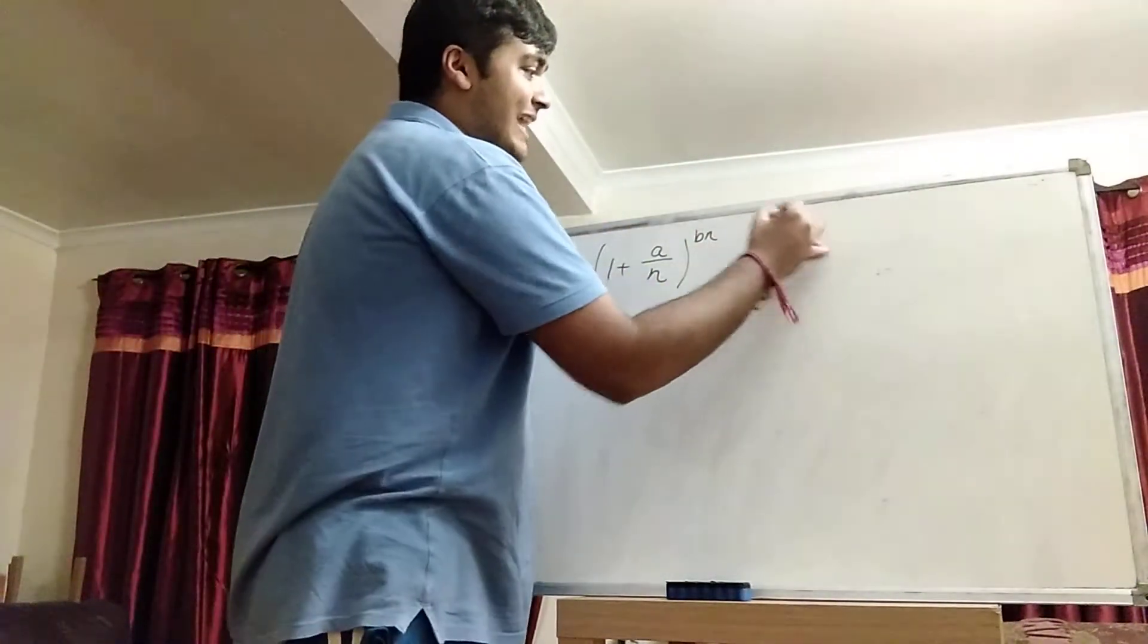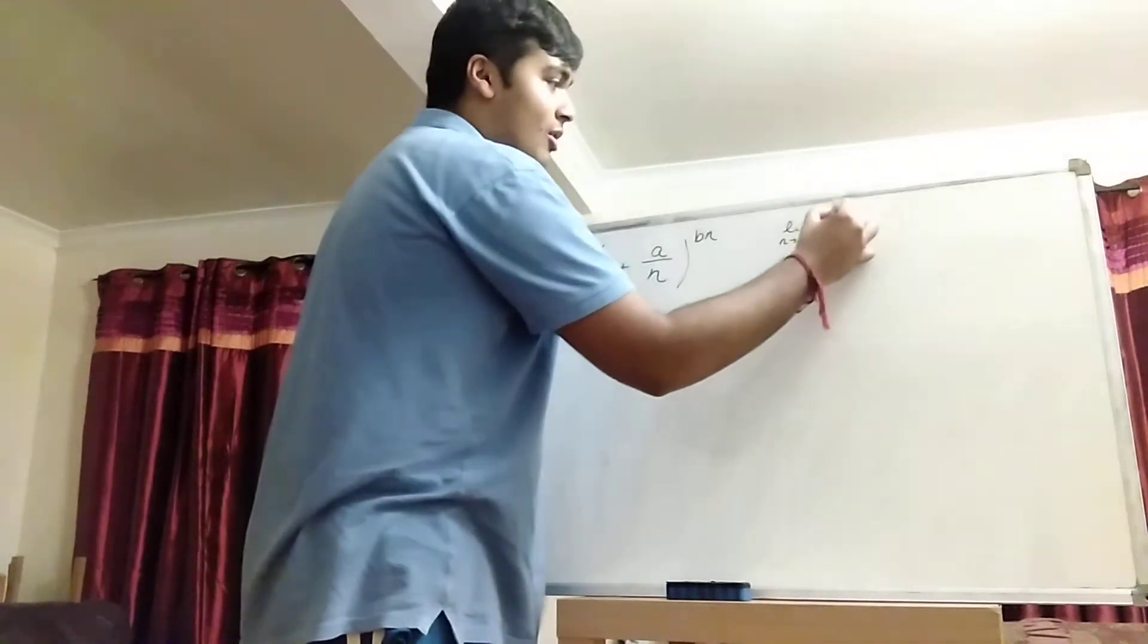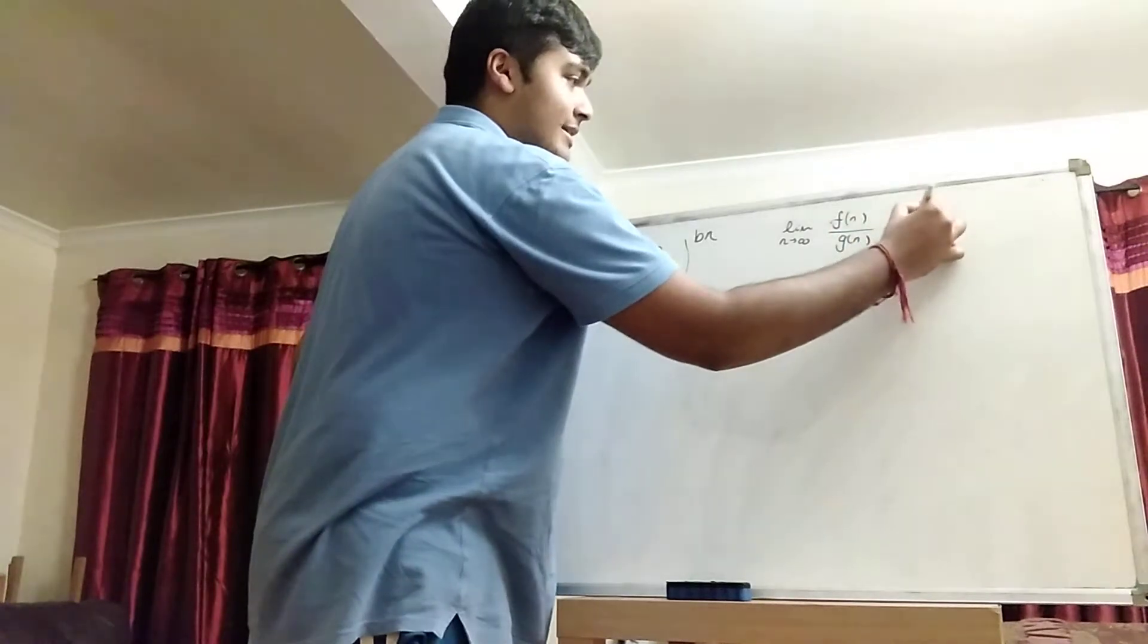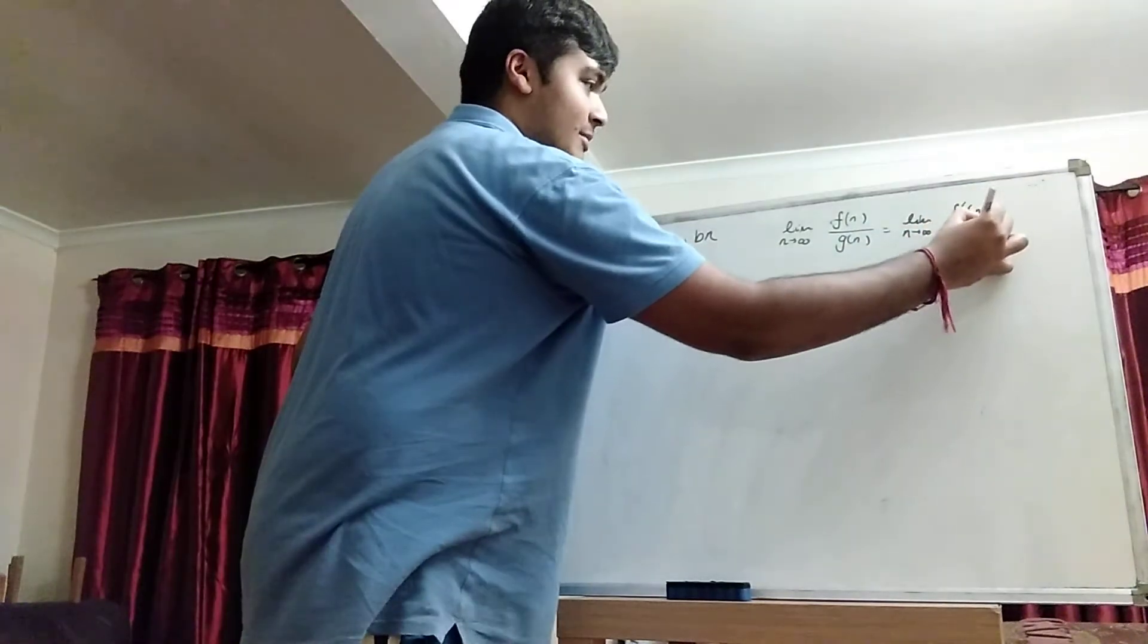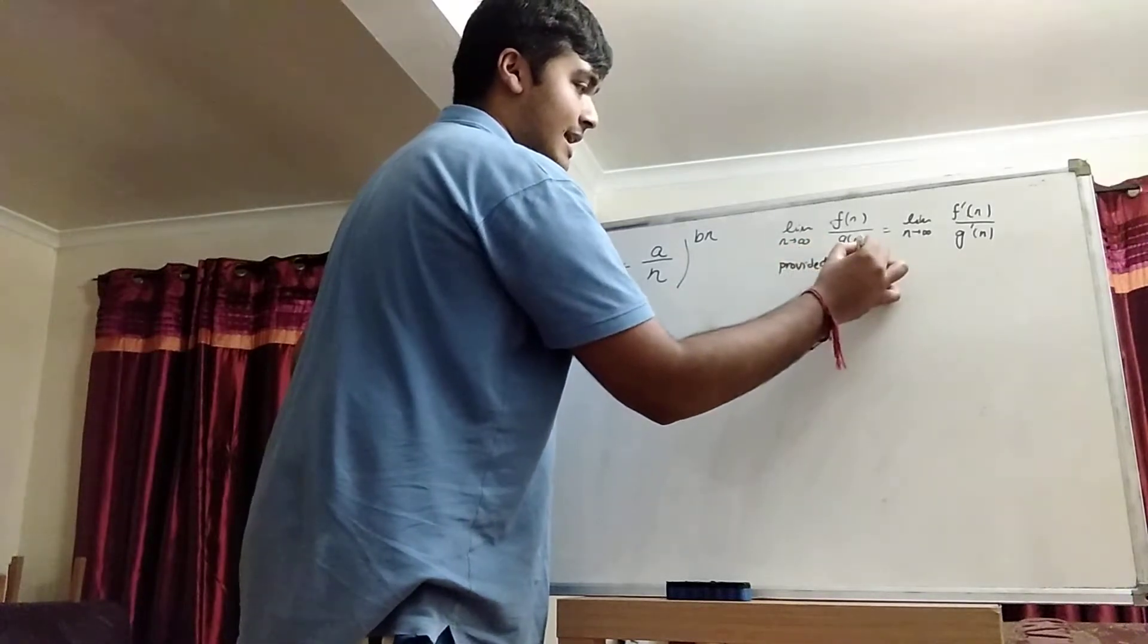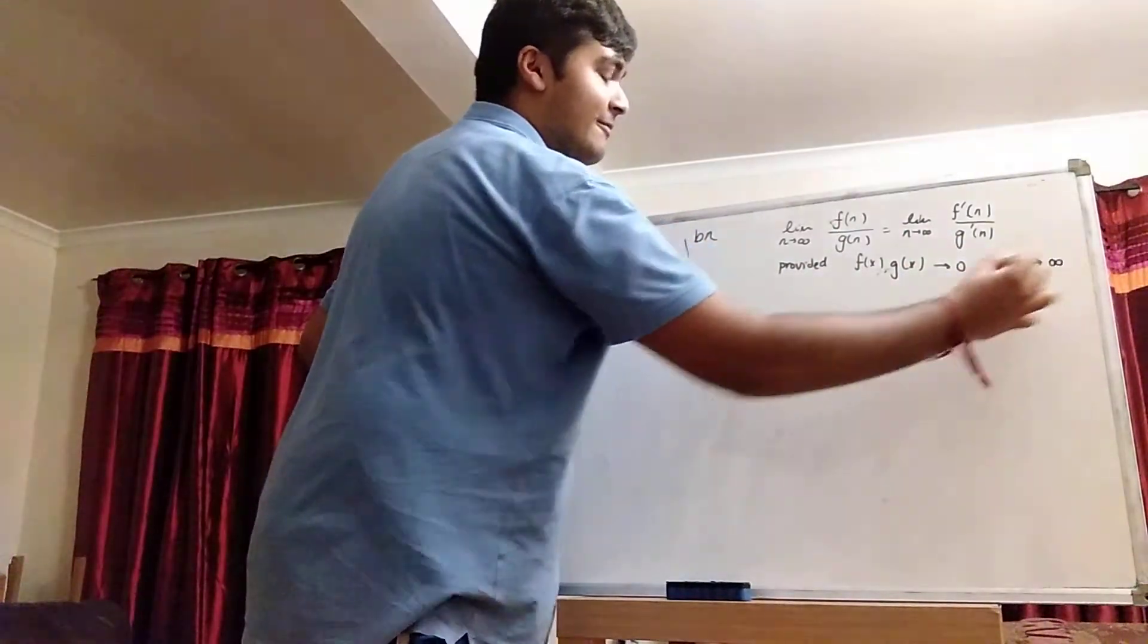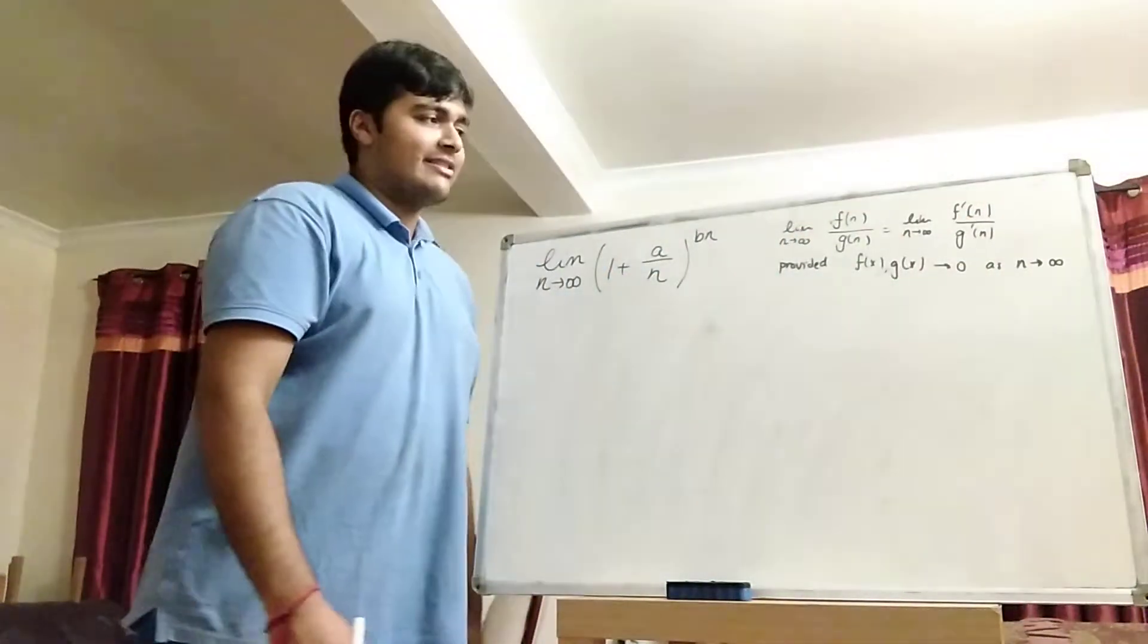So here's a sort of special case of L'Hopital's rule. It says the limit as n goes to infinity of some function f of n divided by g of n equals the limit as n goes to infinity of f prime of n divided by g prime of n, provided f of x and g of x go to 0 as n goes to infinity. And of course, there's no dividing by 0 or anything like that.